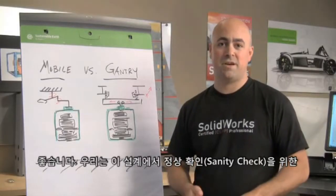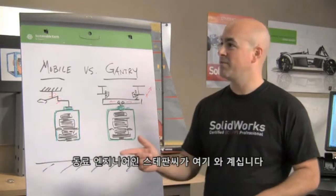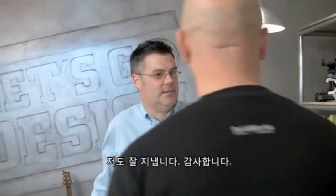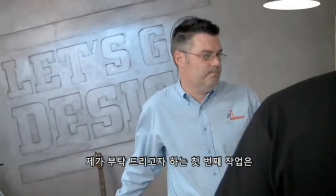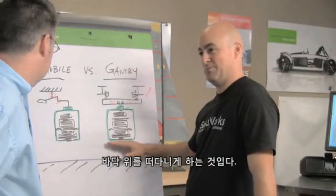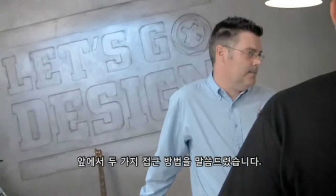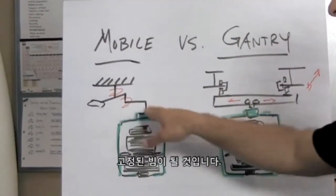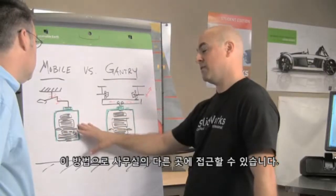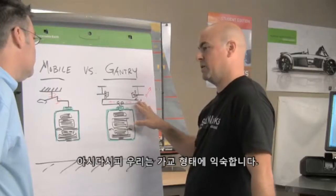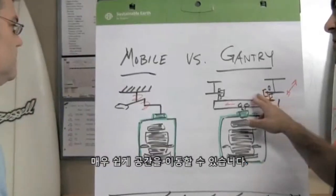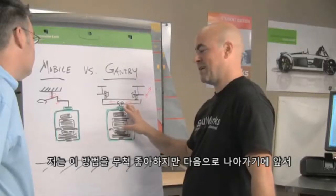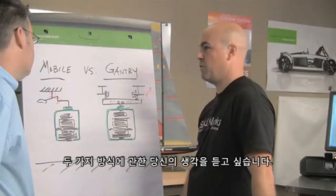We're at the perfect stage for a sanity check. I've got my buddy Stephen here, fellow engineer. We've got to build the ultimate office chair. The first approach is a fixed beam with a mobile setup and counterweights, which gives access to other parts of the office. The second choice is a gantry — we're all familiar with gantries — it lets me move around the space really effortlessly. I like this one a lot but I want your thoughts on both before I go forward.